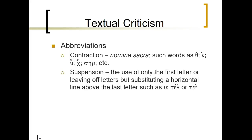Sometimes there is suspension — the use of only the first letter of a word, or leaving off letters but substituting a horizontal line above the last letter. For instance, with kurios, a line over it indicates an abbreviation where a letter is effectively lifted up. This is another form of abbreviation used by scribes, and telos could be another example.